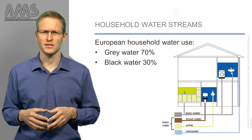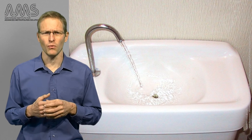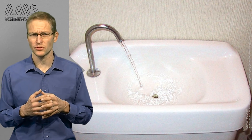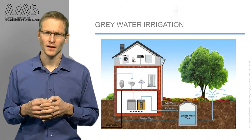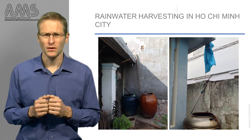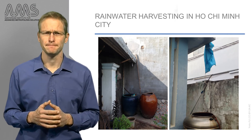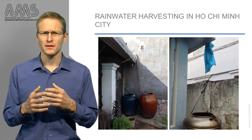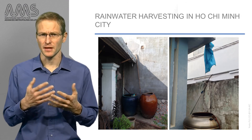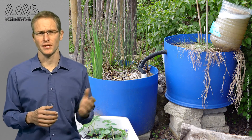Here is a simple example of how water from a sink can be reused for toilet flushing. Here is an example of grey water irrigation, and here one where rainwater is harvested in Ho Chi Minh City. But often simple cascading is not enough and water needs to be treated. Sometimes grey water needs treatment, which can be done through simple sand filtration as shown here.